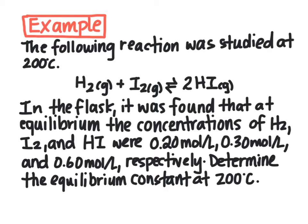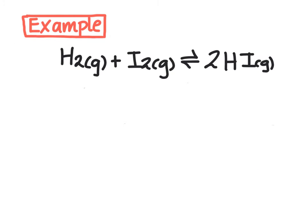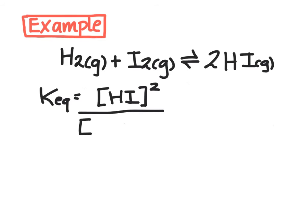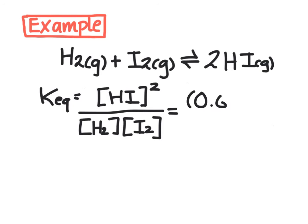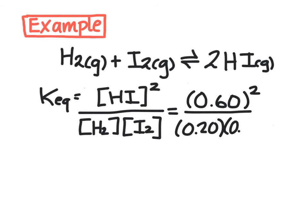Hydrogen is 0.2, iodine is 0.3, and HI is 0.6. First, we're going to determine the equilibrium constant at 200 degrees Celsius. KEQ is going to equal the molar concentration of hydrogen iodide squared — because the coefficient is 2 — divided by the concentration of hydrogen times the concentration of iodine, whose coefficients are 1. We plug in the values: 0.60 moles per liter for hydrogen iodide, 0.20 for hydrogen, and 0.30 for iodine. Our equilibrium constant comes out to be 6.0.